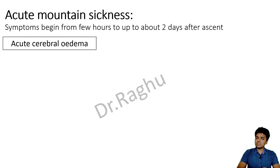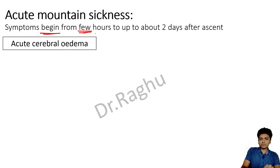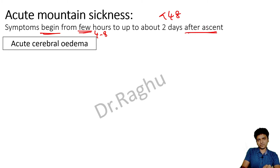There is something called acute mountain sickness. The symptoms begin from a few hours — maximum within four to eight hours — up to two days, that is less than 48 hours after ascent. The pathophysiology of acute mountain sickness involves two things.